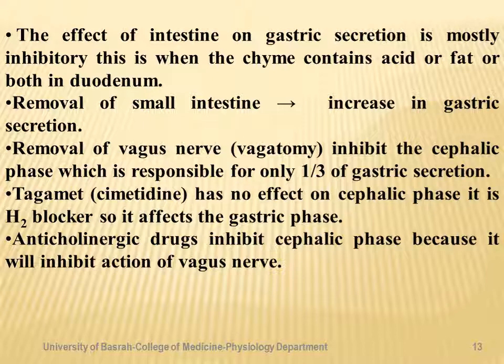If the small intestine is removed, gastric secretion increases because the intestinal phase is normally inhibitory. If the vagus nerve is cut, it abolishes the cephalic phase — approximately one-third of gastric secretion. H2 blockers like cimetidine or ranitidine inhibit the effect of histamine on the parietal cell. Anticholinergic drugs like atropine competitively inhibit acetylcholine at muscarinic receptors, reducing acid secretion.